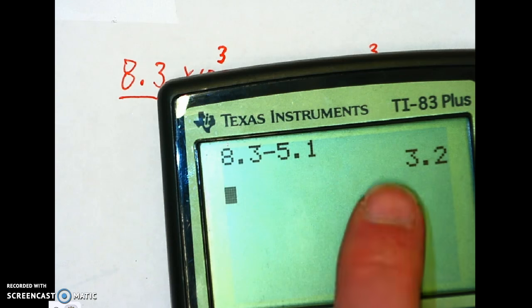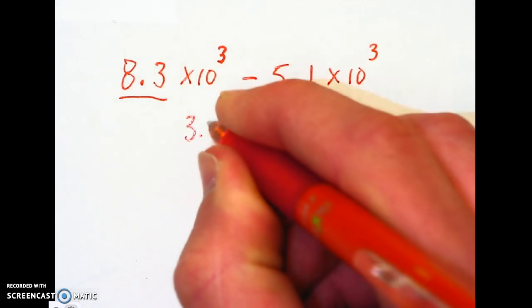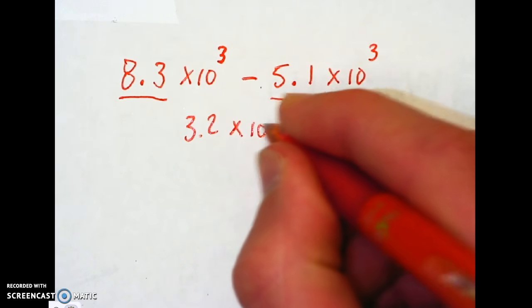That's nice. We're not going to have to rewrite it. So I've got 3.2 and you just rewrite the power, times 10 to the third power.